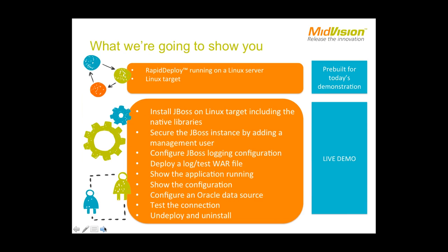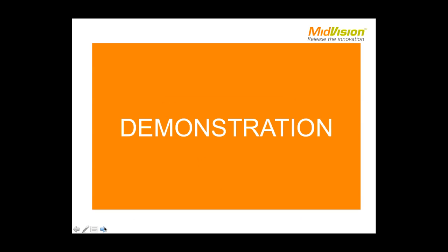In today's demonstration, we have pre-built projects with Rapid Deploy running on a Linux server and a JBoss target to deploy to, connecting via SSH. We'll install JBoss onto that target, install the native libraries — the shared object file for Linux — and secure the instance by adding a management user. We'll then change some logging configuration, deploy a simple WAR file which is a log test application, show the application and configuration, deploy an Oracle module and data source, and subject to time, undeploy the application and uninstall JBoss.